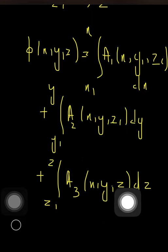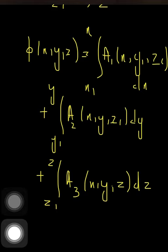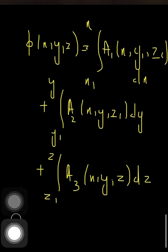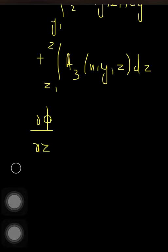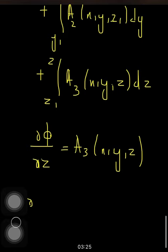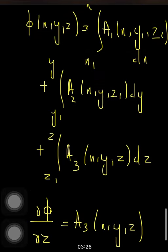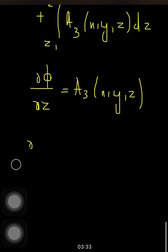Taking the partial derivative of φ with respect to z: the first two integrals don't depend on z, so I obtain that partial φ over partial z equals a3(x, y, z).